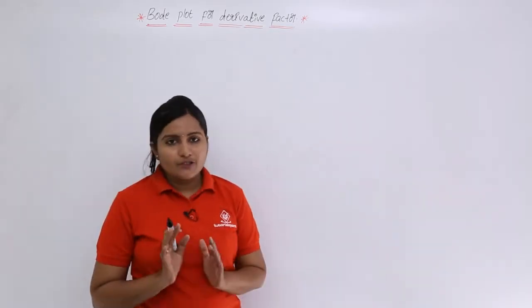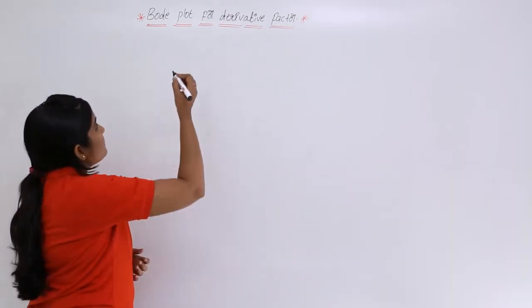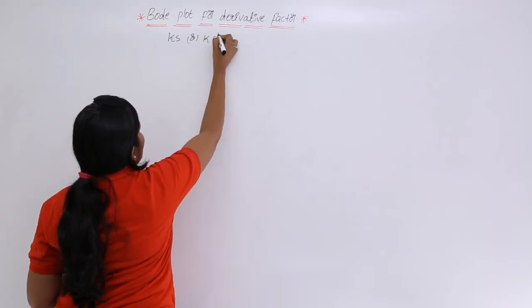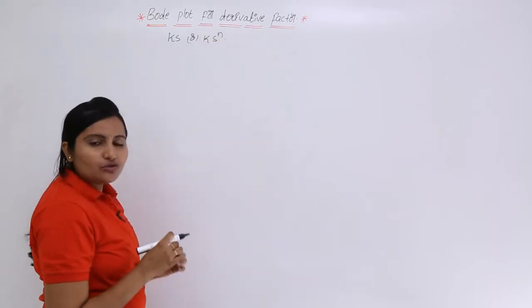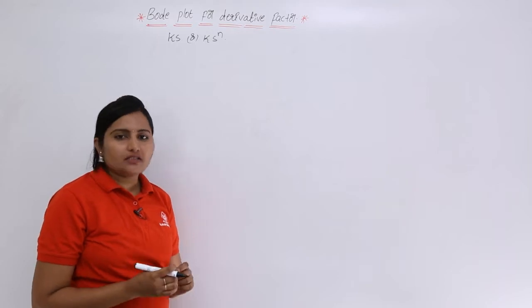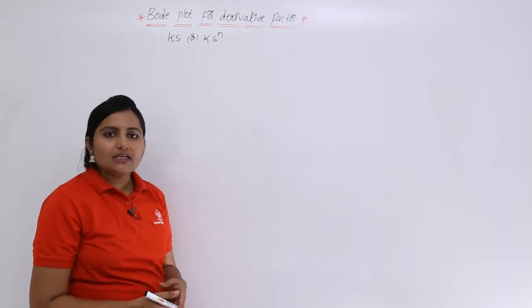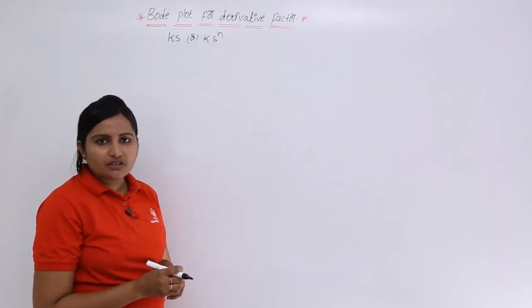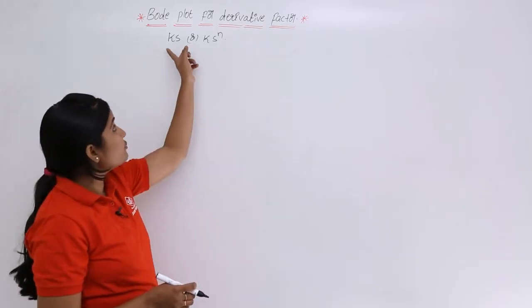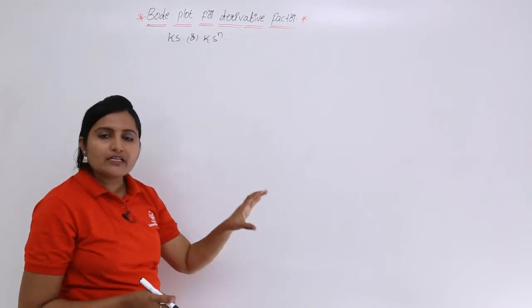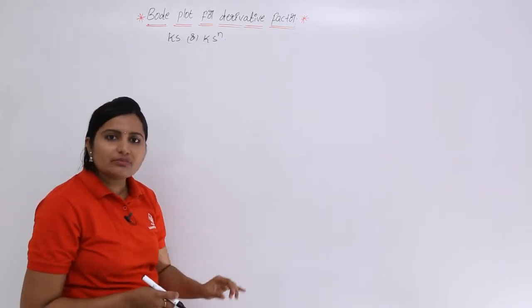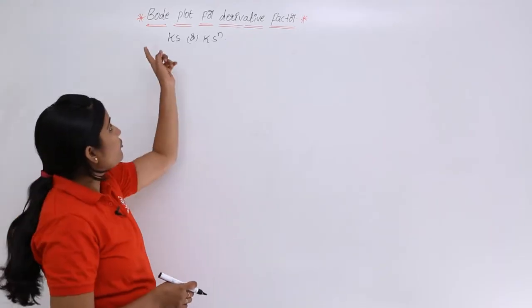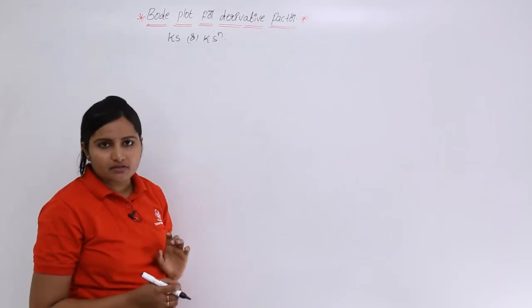The derivative factor will be in the form of Ks or Ks power n. Drawing the Bode plot for the derivative factor means the open loop transfer function of that system is equivalent to that derivative term. If the open loop transfer function of a control system is equivalent to the derivative term, then what is the Bode plot? This is the meaning of Bode plot of derivative factor.